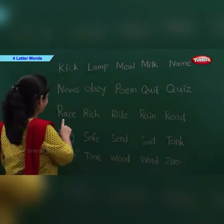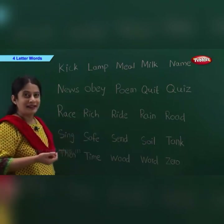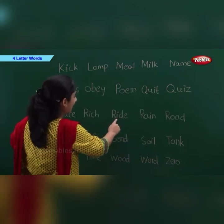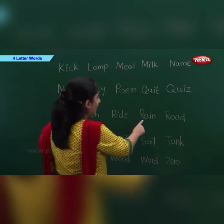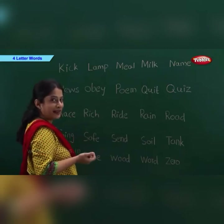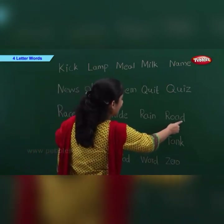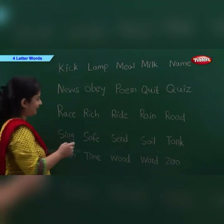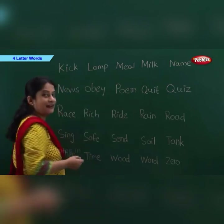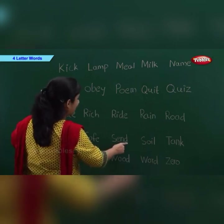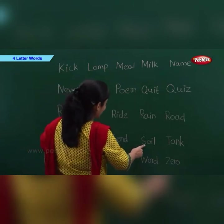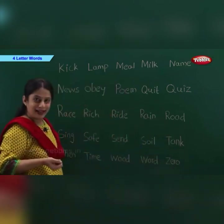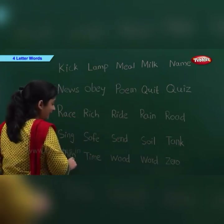R-A-C-E: Race. R-I-C-H: Rich. R-I-D-E: Ride. R-A-I-N: Rain. R-O-A-D: Road. S-I-N-G: Sing. S-A-F-E: Safe. S-E-N-D: Send. S-O-I-L: Soil. T-A-N-K: Tank. T-H-E-N: Then.